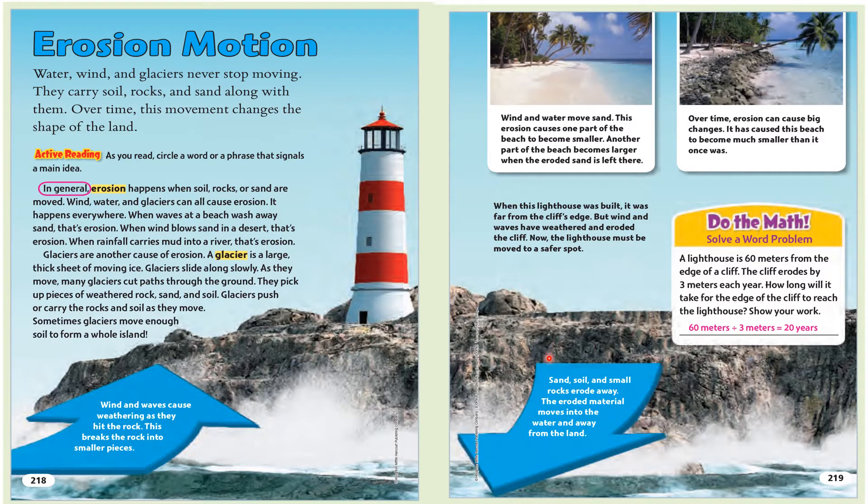Do the math — solve a word problem. A lighthouse is 60 meters from the edge of a cliff. The cliff erodes by 3 meters each year. How long will it take for the edge of the cliff to reach the lighthouse? Show your work.